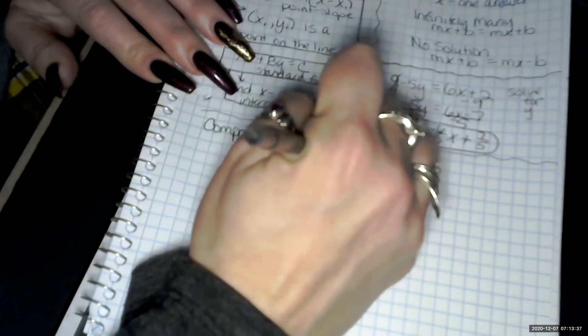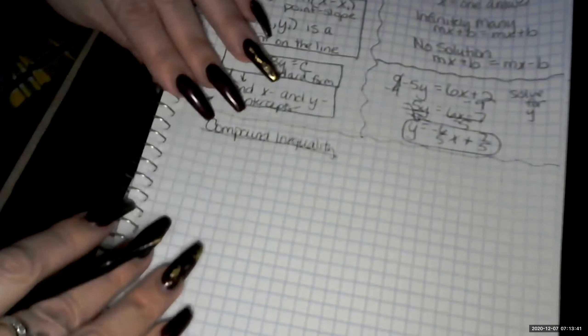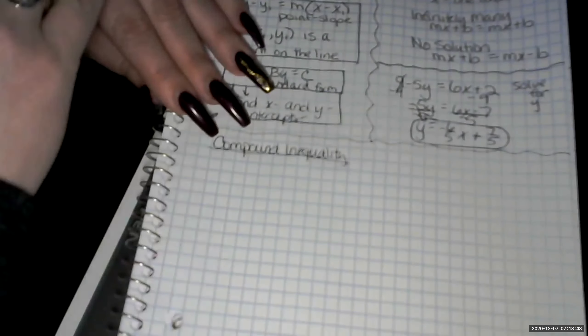So we're going to say compound inequality. We're going to use the one from the study guide. This is one that we haven't worked with a lot all year, but we did do it.